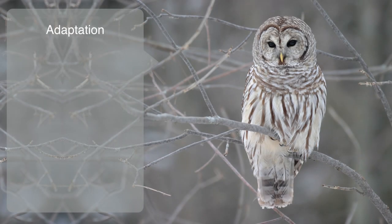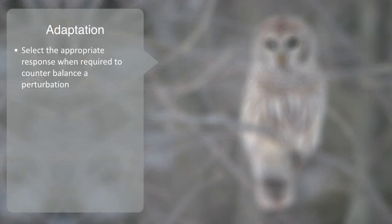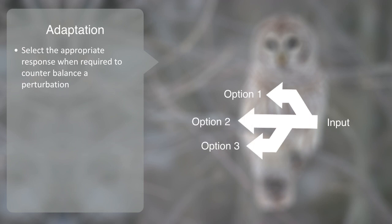Next, we will talk about adaptation as a mechanism for resilience. Here we are talking about the system's capacity to maintain or generate sufficient diversity of states for it to be able to select the appropriate response when required to counterbalance a perturbation from its environment and thus maintain its internal configuration within the required critical parameters to preserve its structure or function.